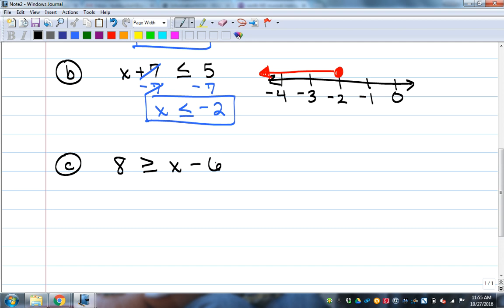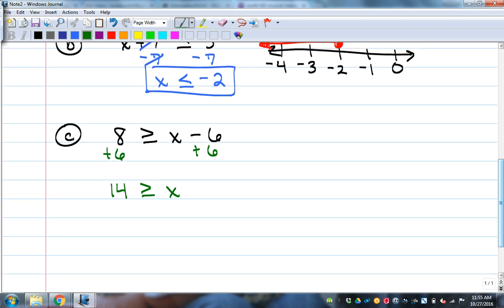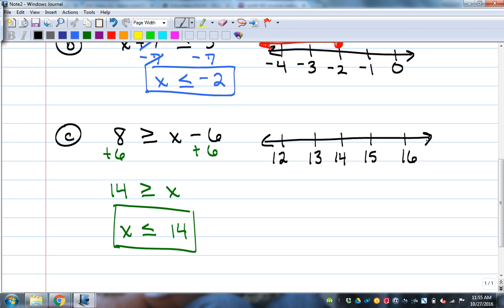8 is greater than or equal to x minus 6. That's going to be 14 is greater than or equal to x. If I rearrange that so that x is on the left, what symbol goes between the x and the 14? Less than or equal to. Turn it around. Then that would be our solution. On a number line, 14 goes in the middle. Hopefully you put those numbers on there. Open or filled in? Filled in. What numbers are less than 14? 13 and 12. So that's the direction I'm going to go. Not very difficult so far, right?